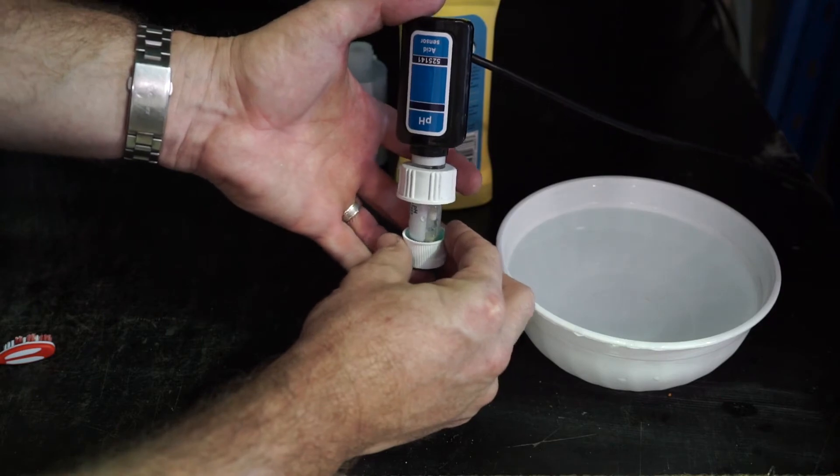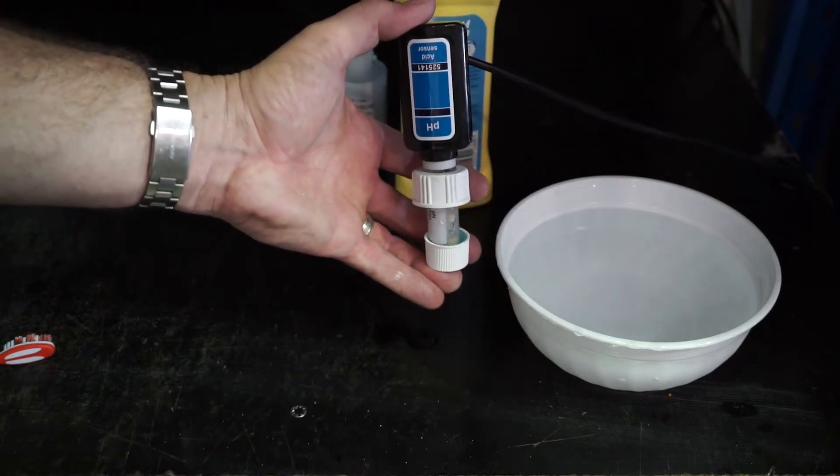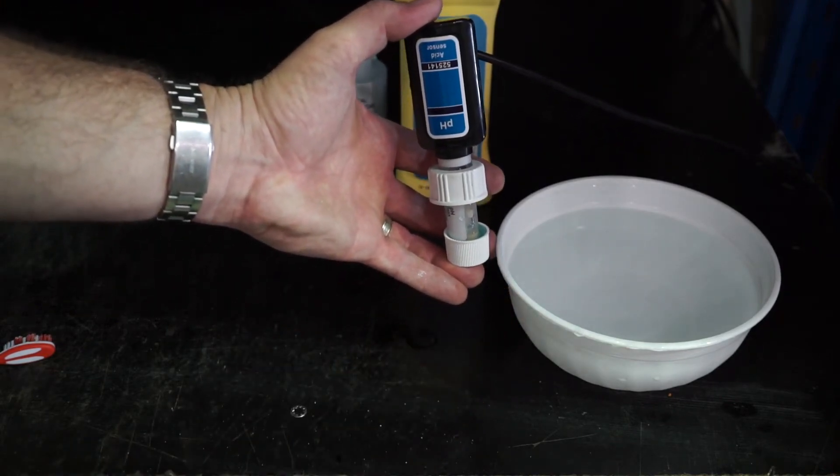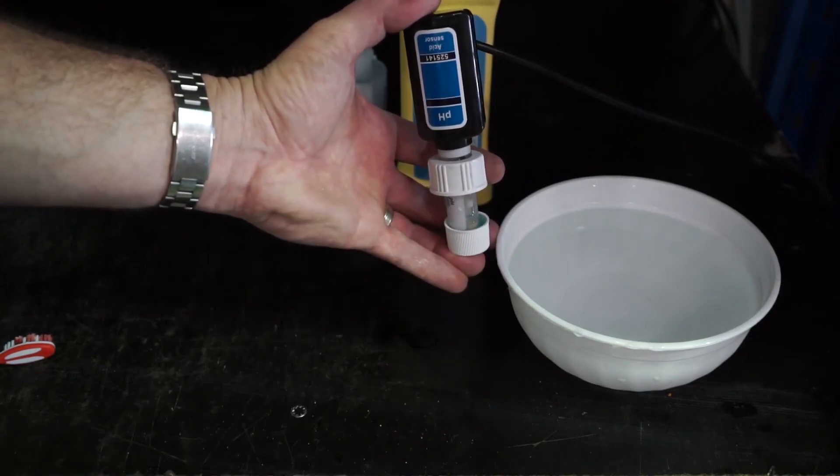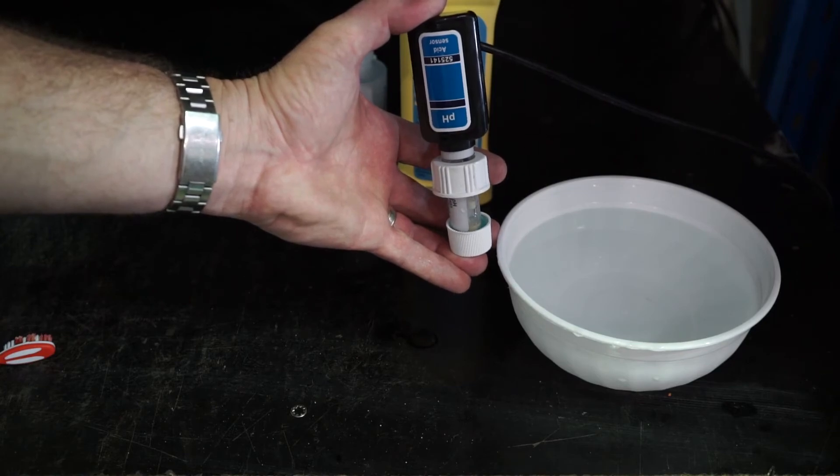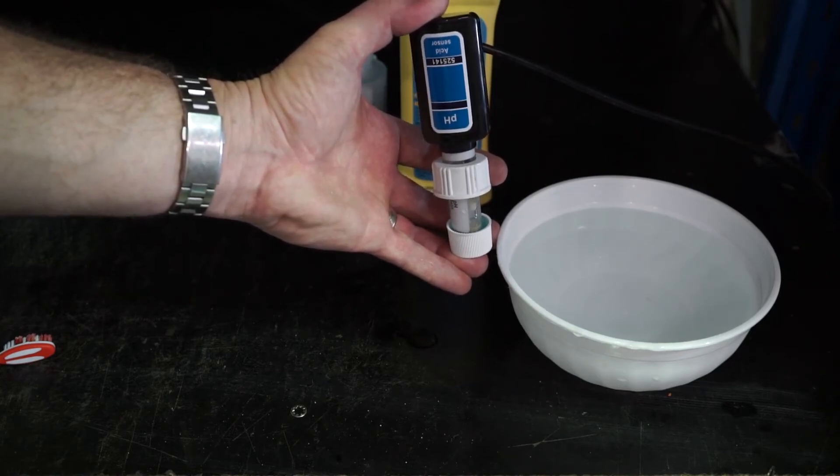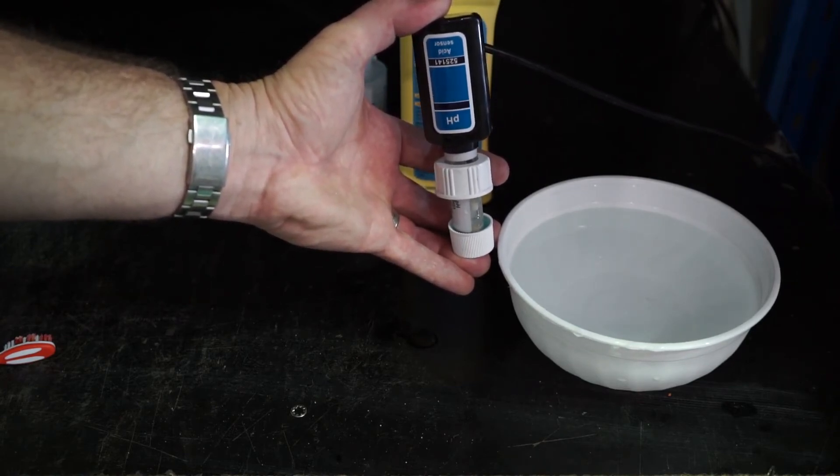We'll simply hold our probe in the cap with the solution, making sure that the solution is covering the top of the tip completely. Then we'll go to our EQ chlorinator and start the calibration process.